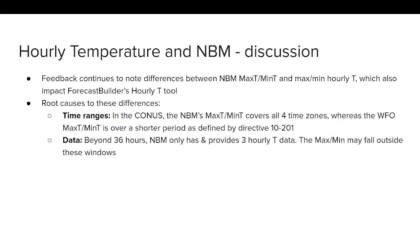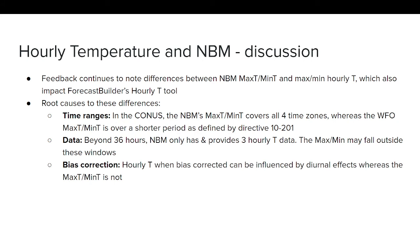Second, beyond 36 hours the MBM only provides three-hourly temperature data, so if the maximum occurs between one of those three-hour intervals, you won't capture it. Third, bias correction: hourly temperature is bias corrected and over a couple of months the MBM will predominantly show a diurnal trend, even in fall, winter, and spring when non-diurnal effects occur. Max T and min T do not include that diurnal correction, creating another source of discrepancy. The MBM developers are aware of this and are working on it, though it is not an easy problem to solve.